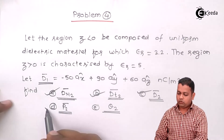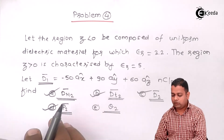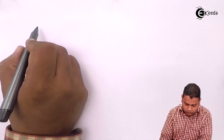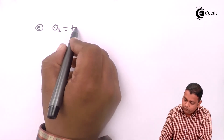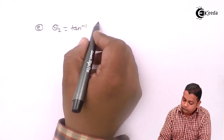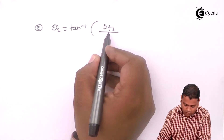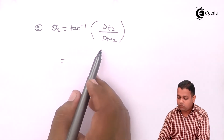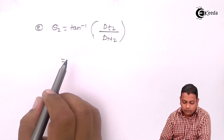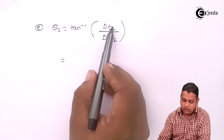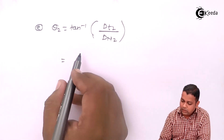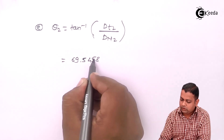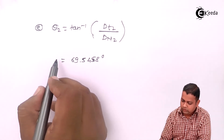For part E, we find angle theta2 using the inverse tangent ratio. Theta2 equals tan inverse of dt2 over dn2, substituting the magnitudes from the answers of part B and part A. This gives theta2 equals 69.5458 degrees.